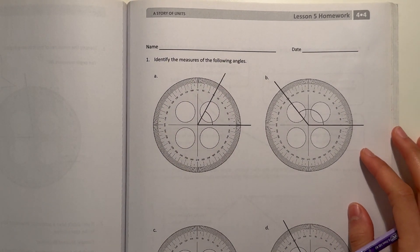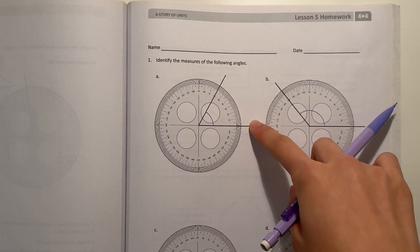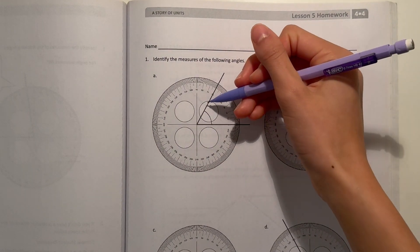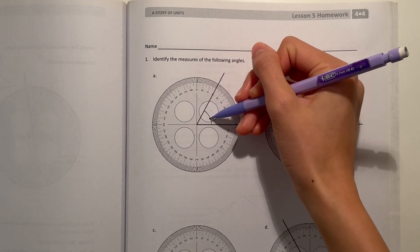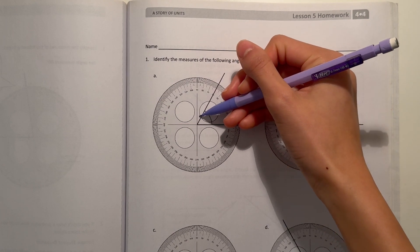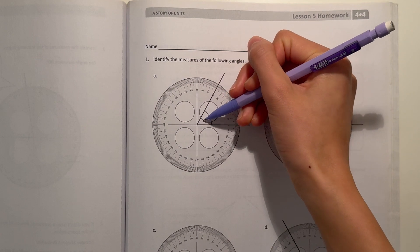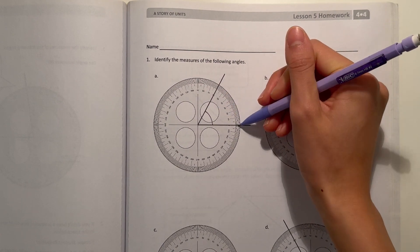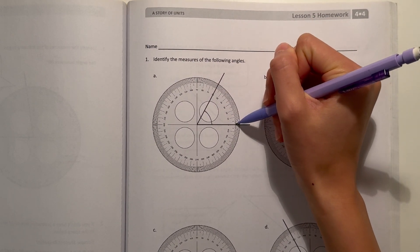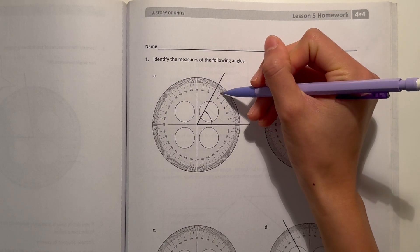For our first angle we have an acute angle. We have an arch here to show what we're measuring, so we're measuring this angle. We look at the protractor, we line up the bottom of the angle to zero, and now it skip counts by 10: 10, 20, 30, 40, 50, 60.